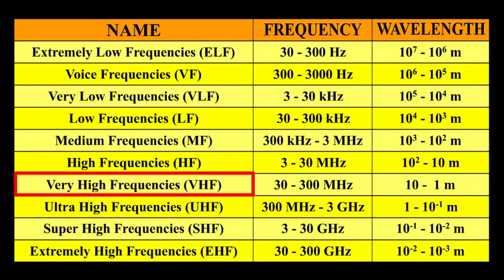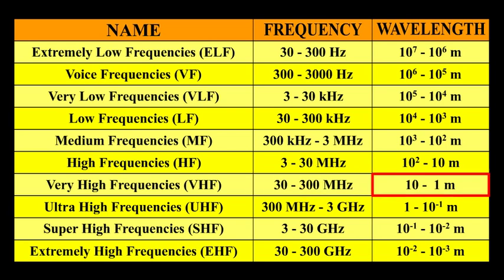Very high frequencies, i.e. VHF, the frequency will be 30 to 300 MHz. The wavelength will be 10 to 1 meter.